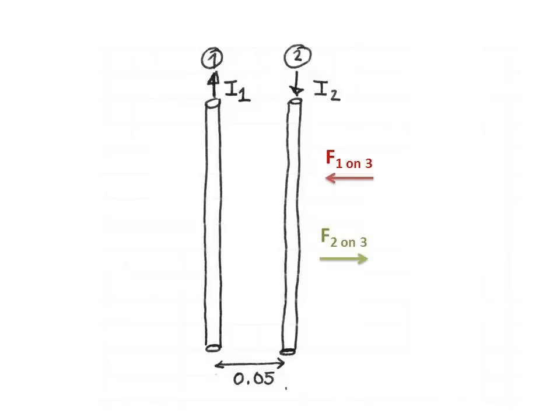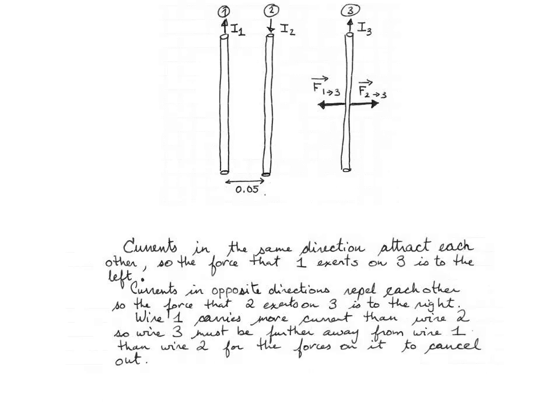On the right-hand side of the picture, the attraction that 1 exerts on wire 3 would point to the left of the picture, and the repulsion that 2 exerts on 3 would point to the right of the picture. So we have two forces pointing in opposite directions. Also, we are further away from wire 1 than from wire 2, so the greater distance from wire 1 could compensate for the fact that the current in wire 1 is bigger. So there's a good possibility that the two forces can cancel on the right side of the picture, and this is where we'll place wire 3. Then we draw the forces on our picture.